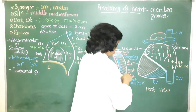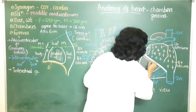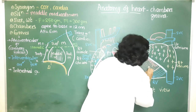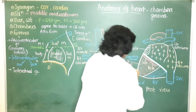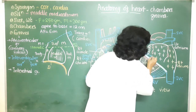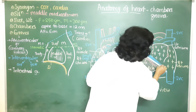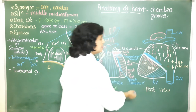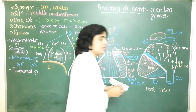The posterior part of the atrioventricular groove lodges the anastomosis between the left coronary artery and the right coronary artery. In addition, it contains the coronary sinus — the large venous channel that drains almost 60 percent of the venous blood from the heart.